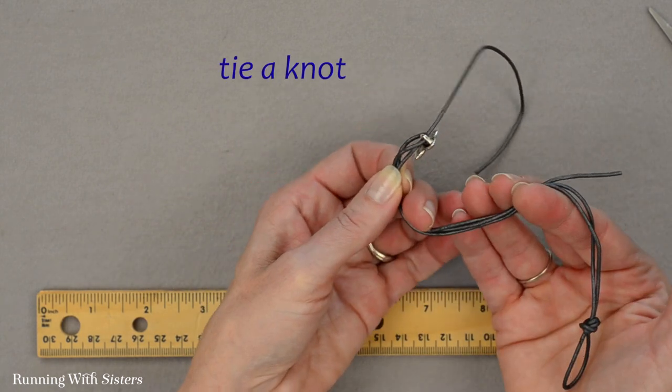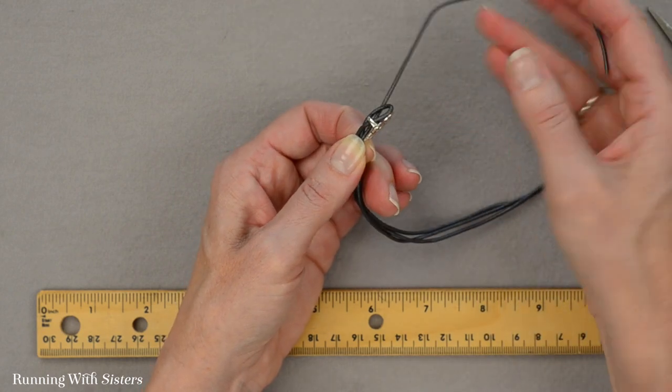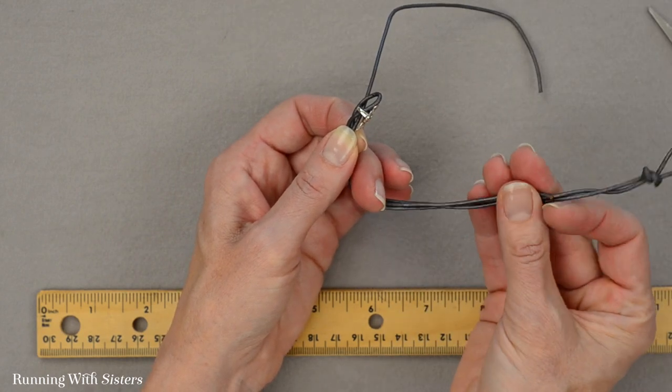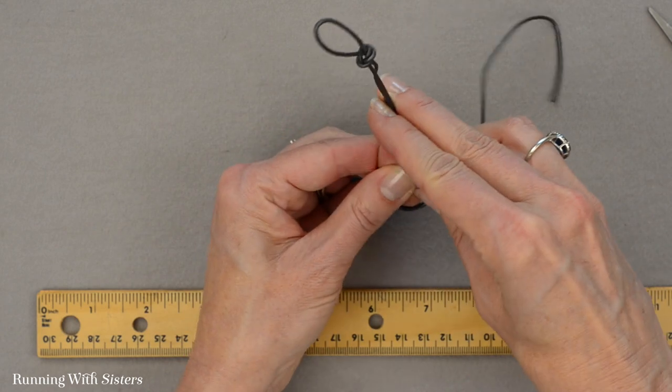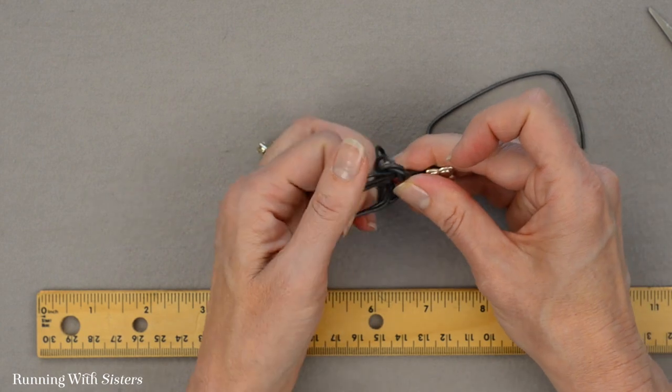And I think it's easier, instead of trying to feed all this stuff through your knot, it's easier to use the loop end and just make a knot like that. Feed all three of those pieces through—it's just easier than the one with the button on it.